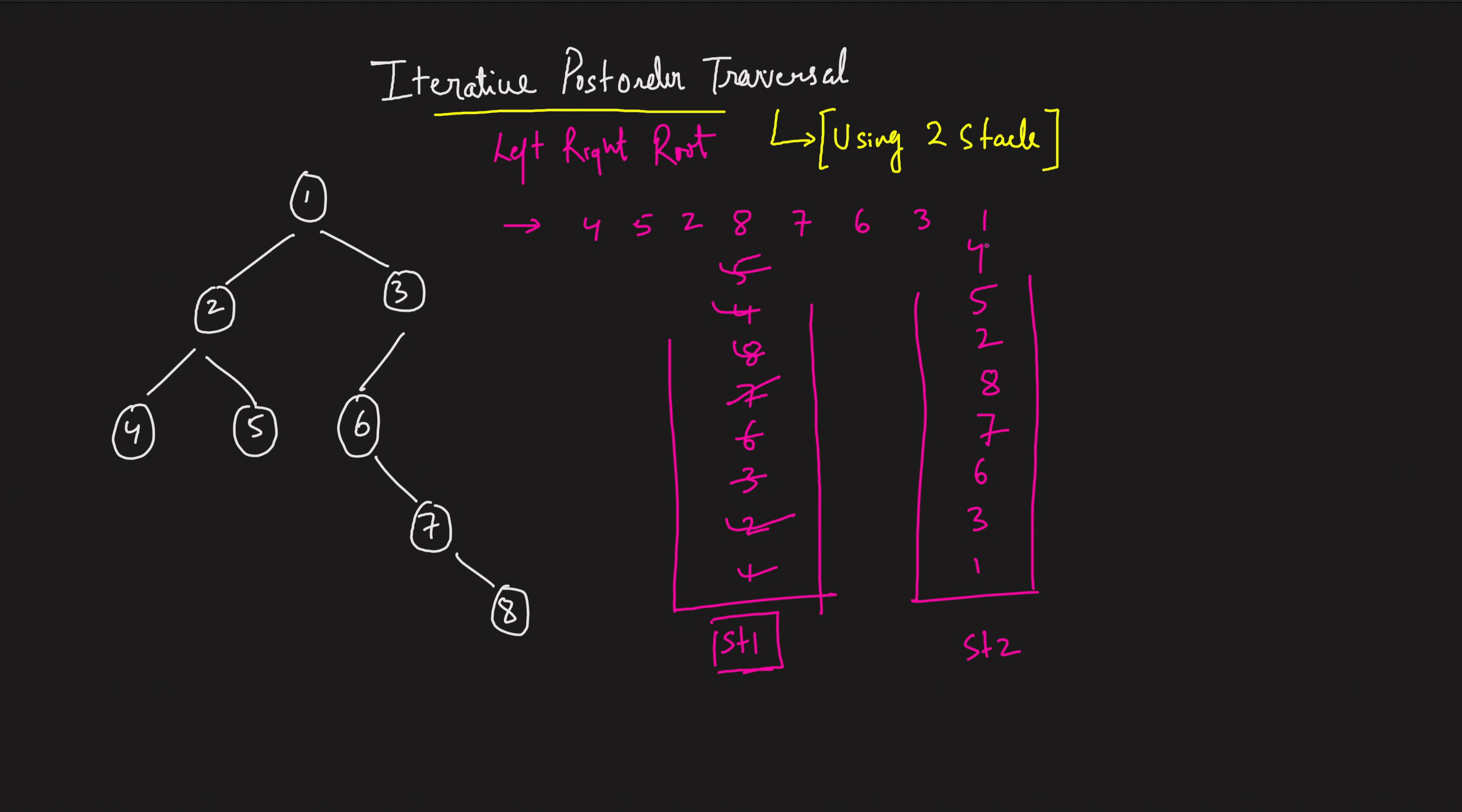And the moment you stop, take these elements out from the stack in the last in first out fashion. So first 4 will be up, so you'll get 4. Then 5 will be up, so you'll get 5. Then 2 will be up, so you'll get 2. Then 8 will be up, so you'll get 8. Then 7 will be up, so you'll get 7. Then 6 will be up, so you'll get 6. Then 3 will be up, so you'll get 3. Then 1 will be up, so you'll get 1. So ultimately, you will get the entire post-order traversal using a couple of stacks.